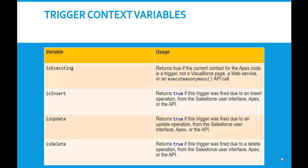isUpdate, as the name indicates, returns true if the trigger was fired due to an update operation — meaning updating an existing record. Whether it's a contact, account, or custom object record, as long as it's an update operation, this context variable will return true, regardless of whether the update is through the Salesforce UI, Apex code, or the API.